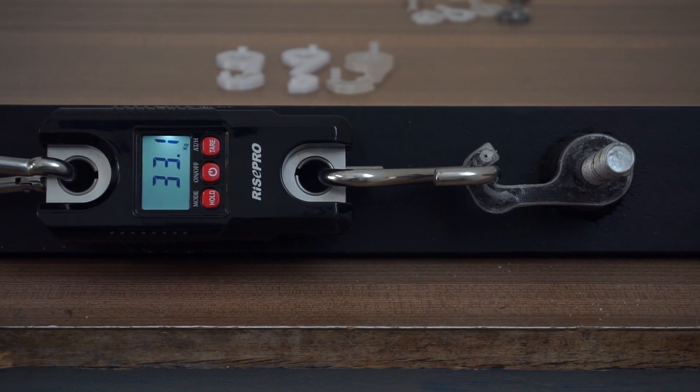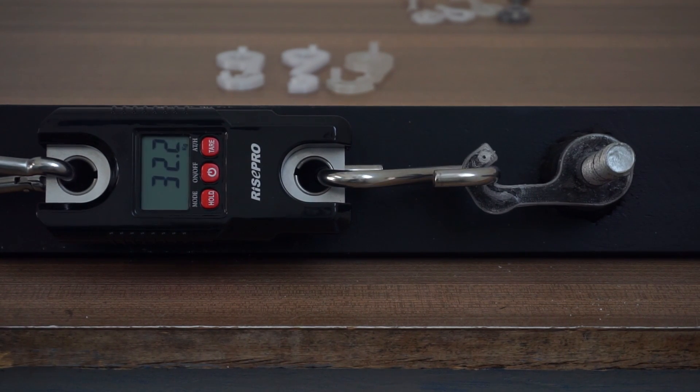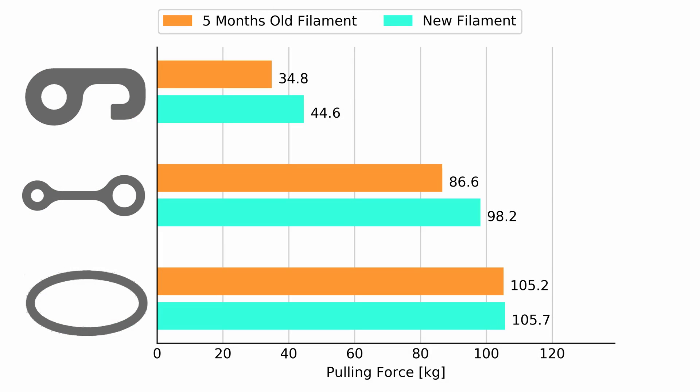First, let's have a look at the results of the normal plastic parts and compare them to the results of the test five months ago. You can see that when the filament was new, the parts were slightly stronger. After five months, the filament seems to have become a little brittle.